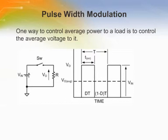Usually, using only a switch is fine for lighting and heater control. When a DC output voltage is needed, an additional filter must be used.